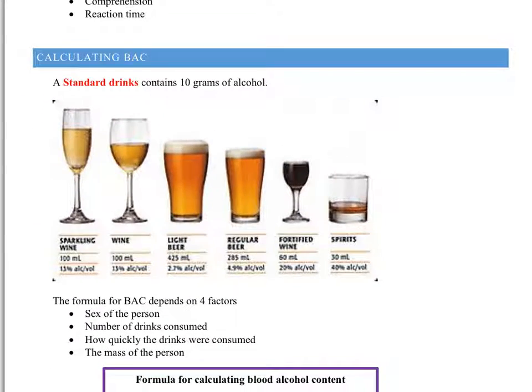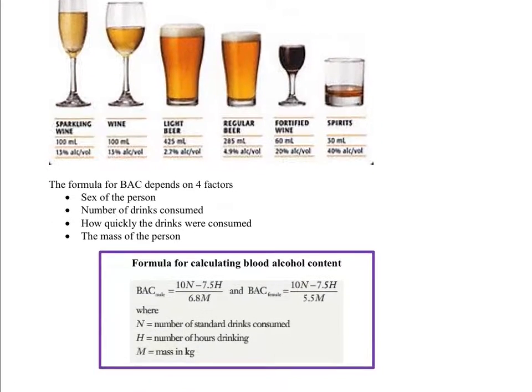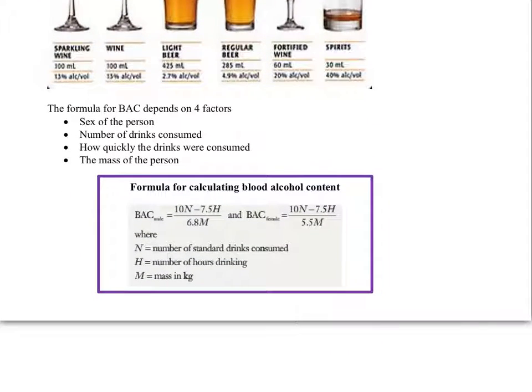A standard drink contains 10 grams of alcohol, and these are the different types of standard drinks. The blood alcohol formula depends on four factors: the sex of the person, the number of drinks consumed, how quickly the drinks were consumed, and the mass of the person - how heavy you are.